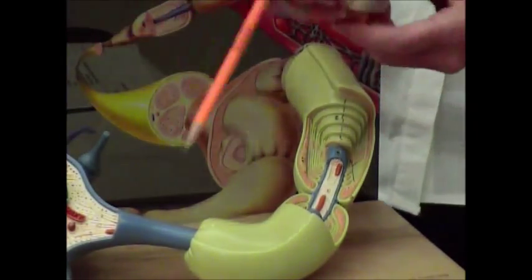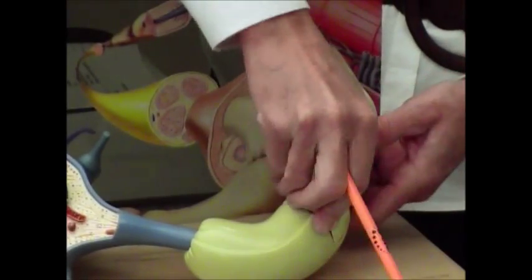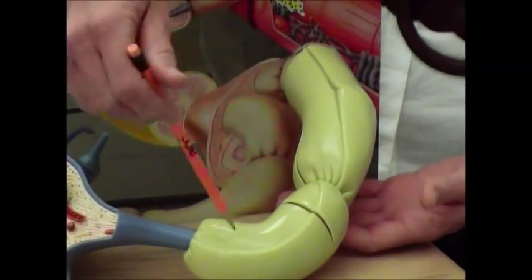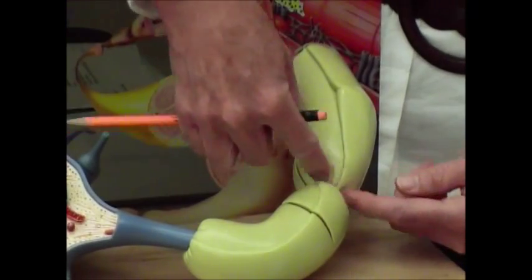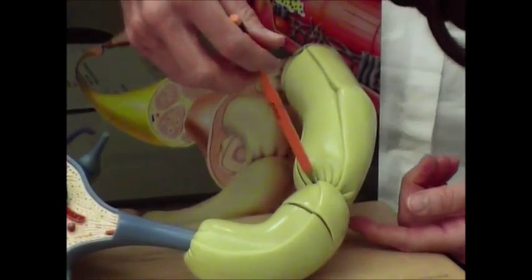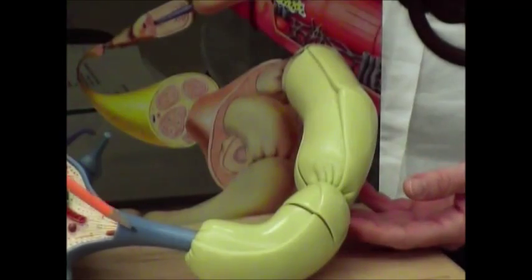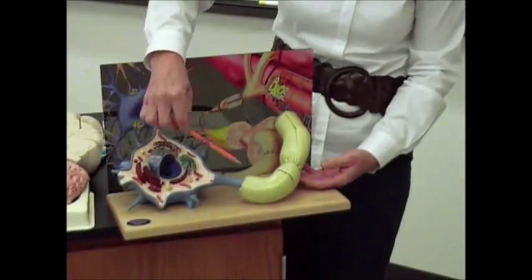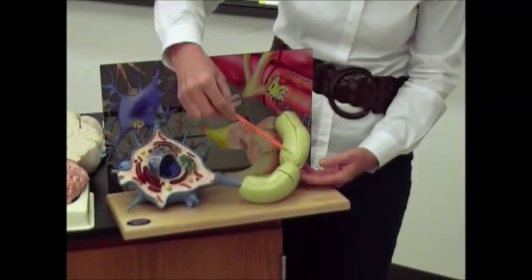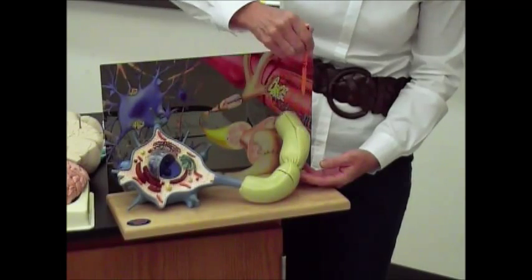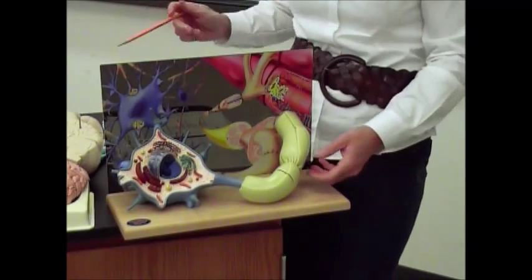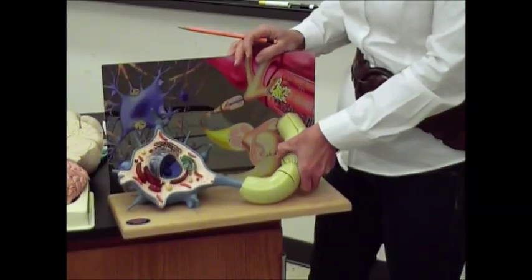In between the Schwann cells, you have a gap here that's known as your node of Ranvier. When the action potential is coming down myelinated fibers, instead of going all the way through the axon, it's going to jump from node to node, and so that speeds up the time of transmission.